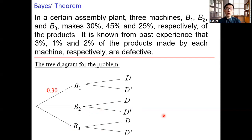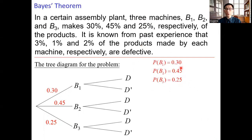From the question, 30% of the product is made by machine b1, so we write probability 0.30 along that branch. And 45% and 25% of the products are made by machine b2 and b3 respectively. So we have marginal probabilities: p of b1 equals 0.3, p of b2 equals 0.45, and p of b3 equals 0.25.